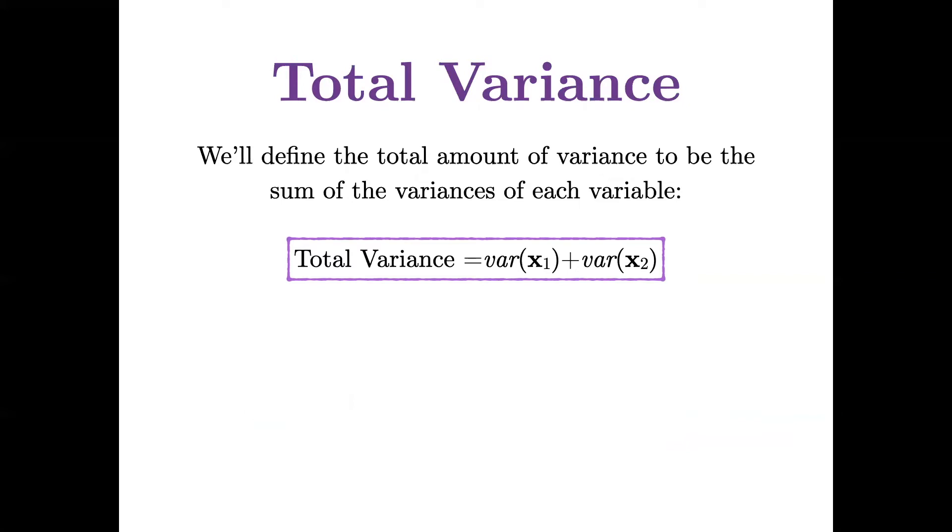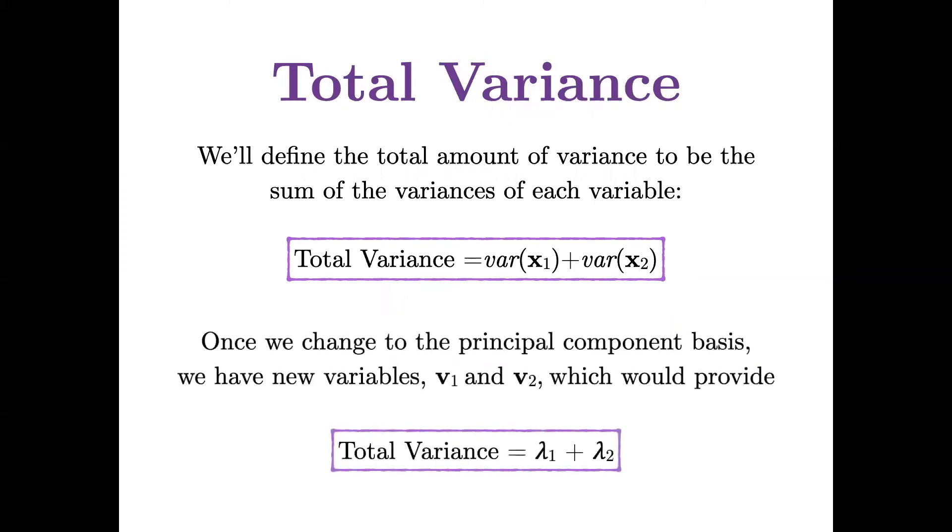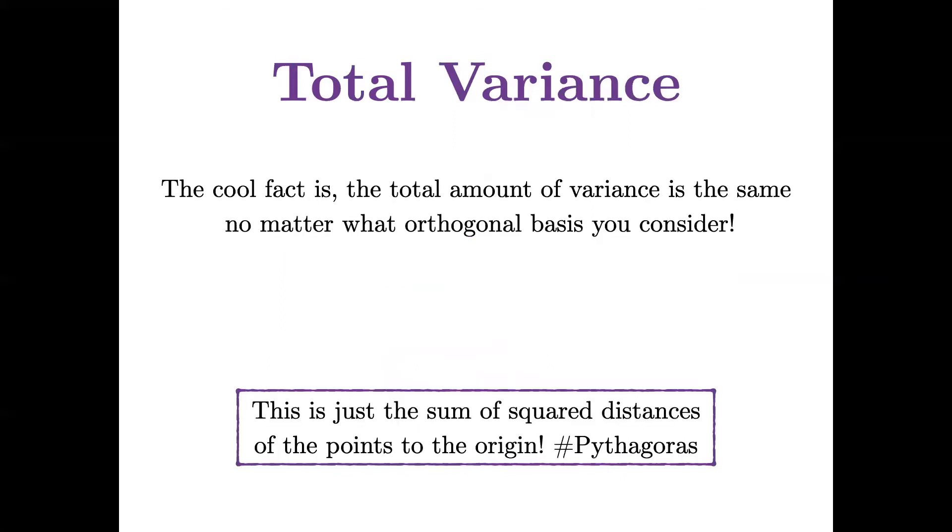And once we change to the principal component basis, we have new variables, v1 and v2, which would provide another way to look at total variance. But the cool fact is the total amount of variance is the same no matter what orthogonal basis you consider. So it's a fact that if I add the variances of my original variables, I will get the sum of the eigenvalues.